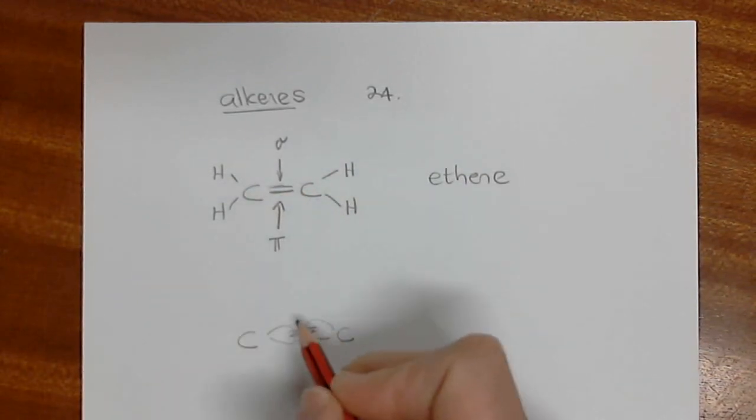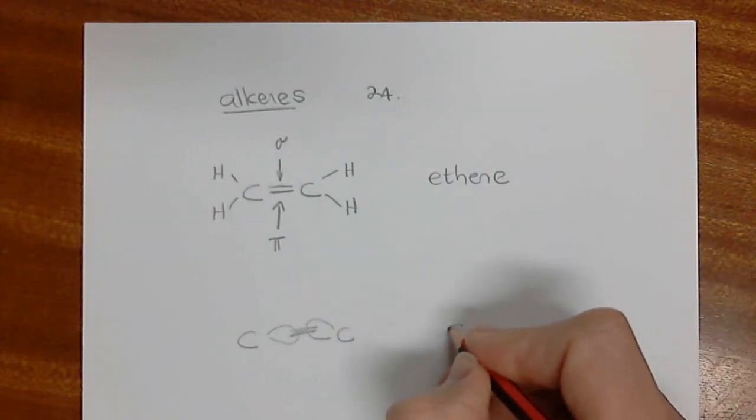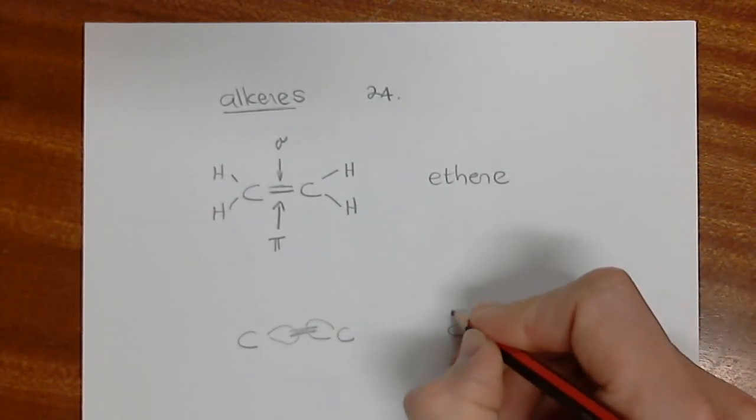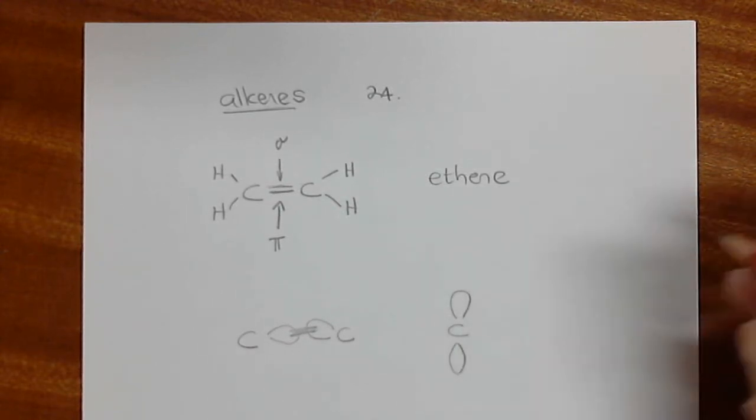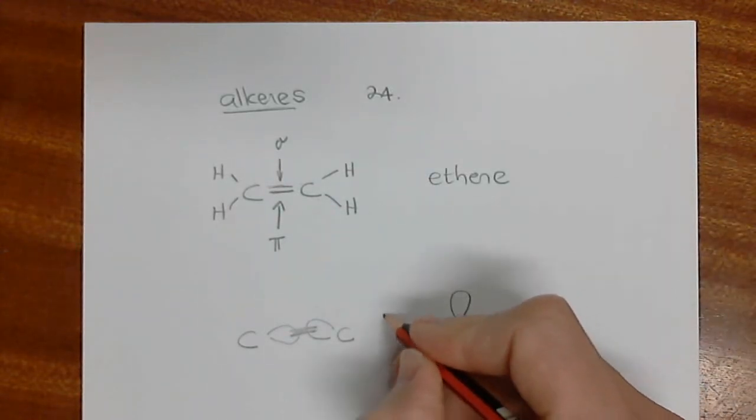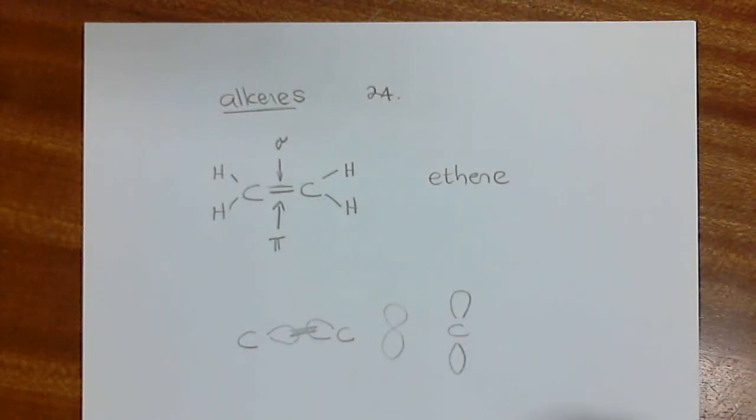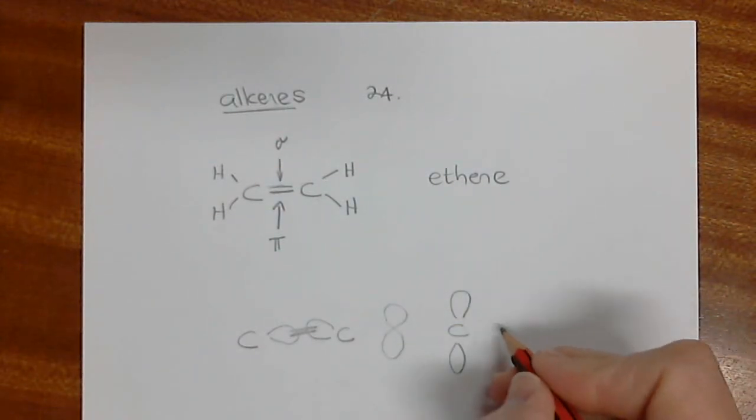A pi bond, though, isn't just these orbitals like that. It's specifically a p orbital. So here's the carbon. Normally we draw out the p orbitals just like a dumbbell like that. I put the carbon in the middle. This is just a general representation of it.